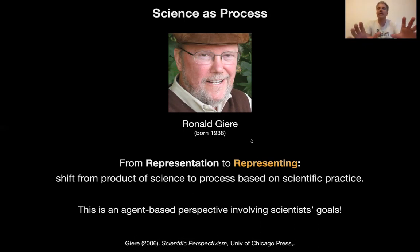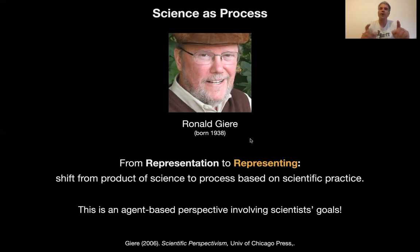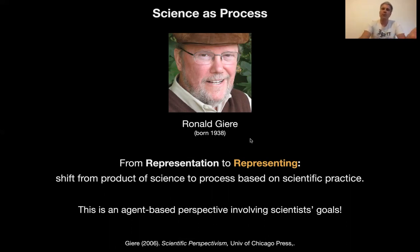So in this lecture, we're going to take this idea a little bit further. What is really important about models is not that they represent the real system accurately, but that they fulfill their purpose. Models are not representations, but rather they are tools. They can still represent the system correctly, but that's not the main point. The main point is that they are efficient as tools that help us gain new insights. Such tools are called epistemic tools — they help us gain new knowledge. So I want to present a view of models as epistemic tools in this lecture.